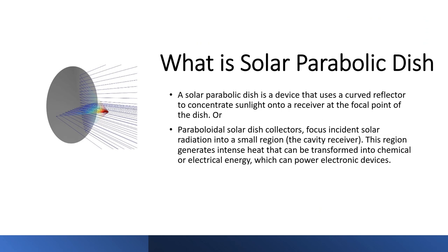A solar parabolic dish is a device that uses a curved reflector to concentrate sunlight onto a receiver at the focal point of the dish. Or, paraboloidal solar dish collectors focus incident solar radiation into a small region, the cavity receiver. This region generates intense heat that can be transformed into chemical or electrical energy, which can power electronic devices.